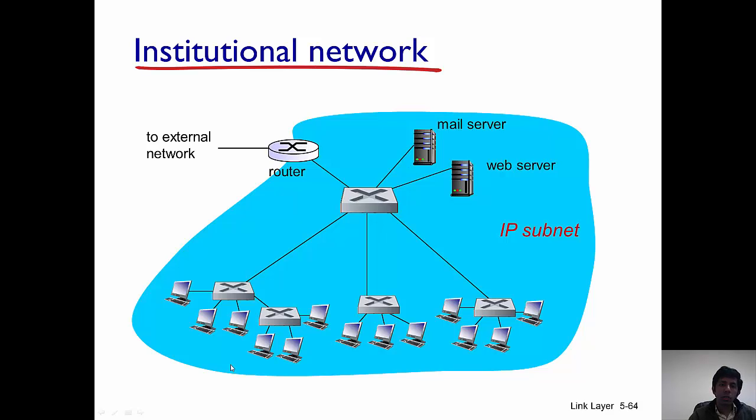So this slide here shows how an institution's network is connected via switches. There are multiple switches within the network which are then connected to another switch and this switch is then connected to the router. So this is the gateway router of the network which is then connected to the external internet.